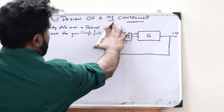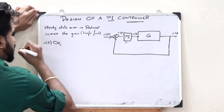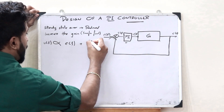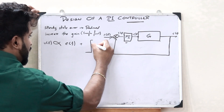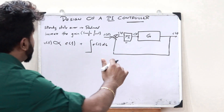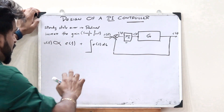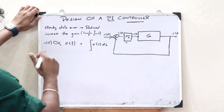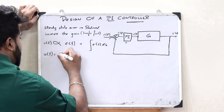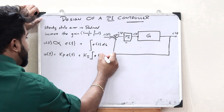According to a proportional integral controller, this particular output signal U of T is proportional to the error signal E of T — this is the proportional part — and it is also proportional to the integral of this particular error signal E of T. That is what you refer to as a proportional integral controller. In order to eliminate the proportional relationship, we need proportional constants. So: U of T is equal to Kp into E of T plus Ki into integral of E of T dt.